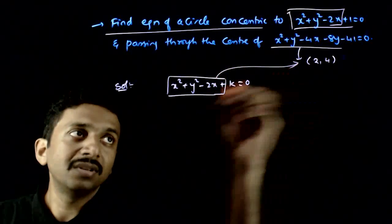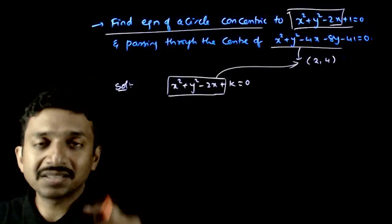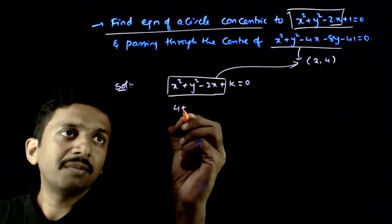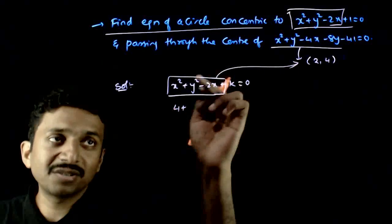Now this has to pass through the center of this circle which is 2,4. So 4 plus, that is this point has to satisfy this equation.